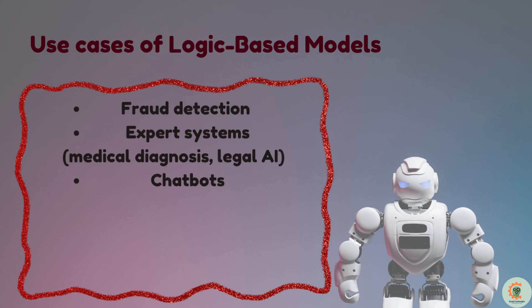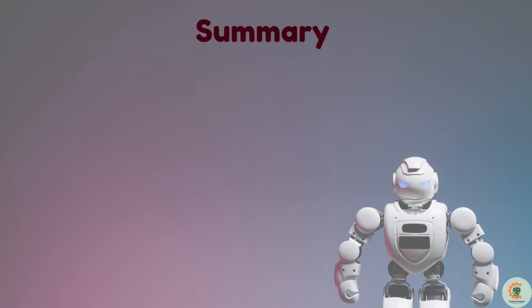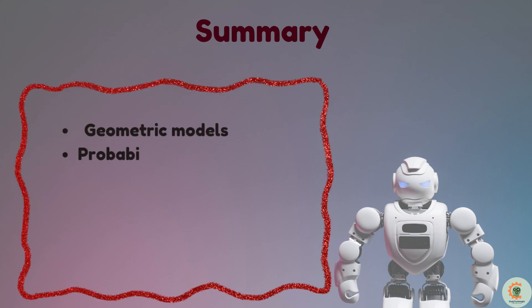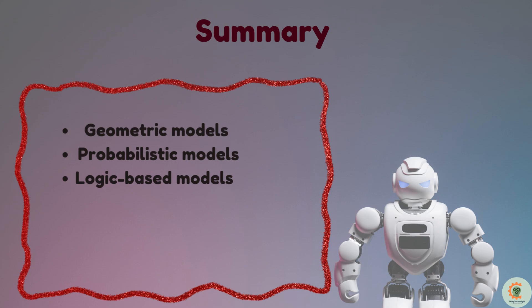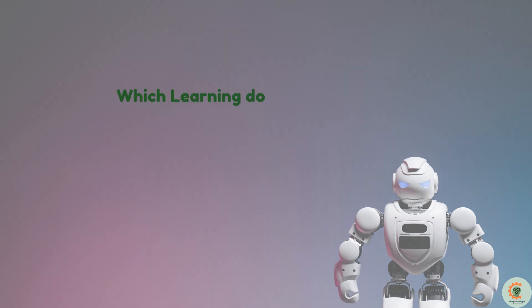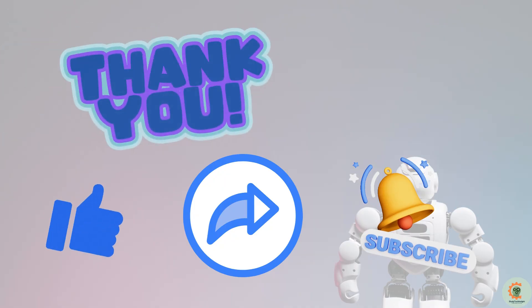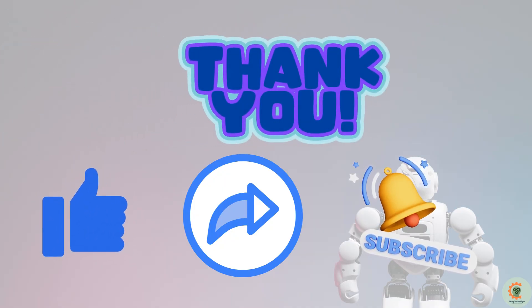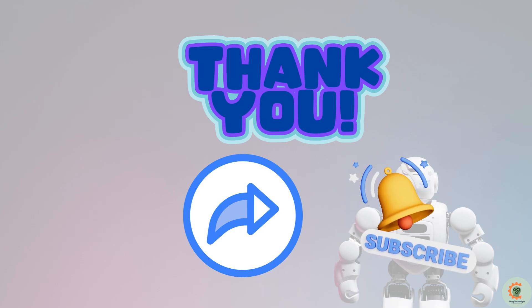To summarize, today we explored the key components of learning and three different learning models: geometric models like KNN and linear regression, great for visualization and boundary-based learning; probabilistic models like Naive Bayes, ideal for uncertain or probabilistic data; and logic-based models like decision trees, used for interpretable rule-based decision making. Which learning model do you find most interesting? Let me know in the comments below. Don't forget to like, subscribe, and hit the bell icon for more AI content. See you in the next video!